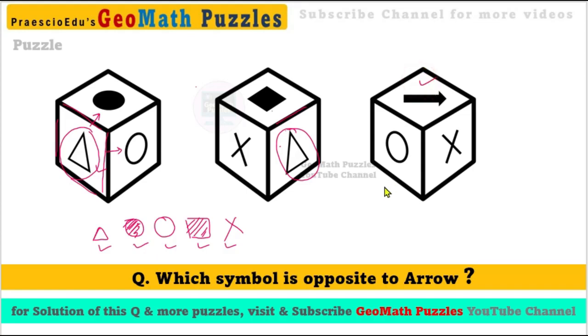the triangle. So this is our answer and we have found out this answer. The symbol opposite to the arrow is triangle.